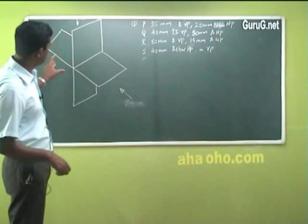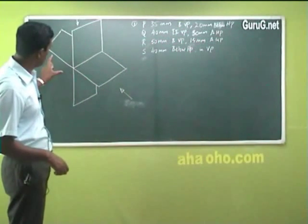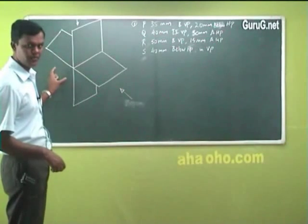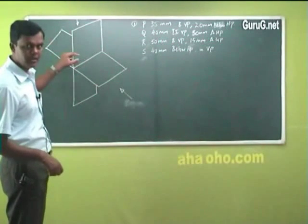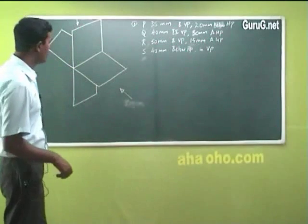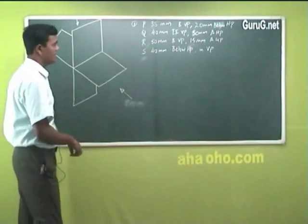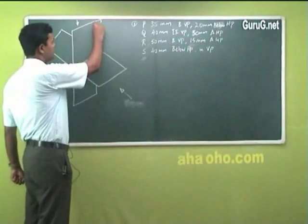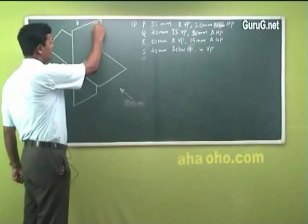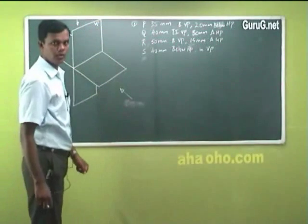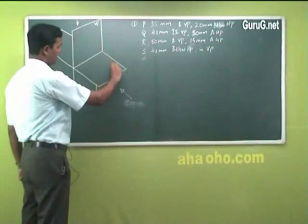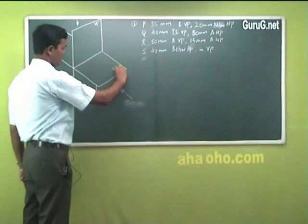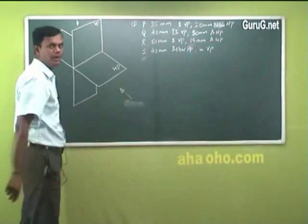This sketch shows a different quadrant level — first, second, third, fourth — including your horizontal plane and vertical plane. Now, which is your vertical plane here? This becomes your vertical plane. Which is the horizontal plane? This is your horizontal plane. I will write HP.